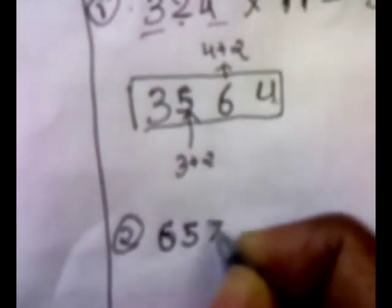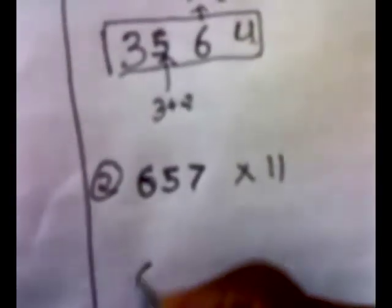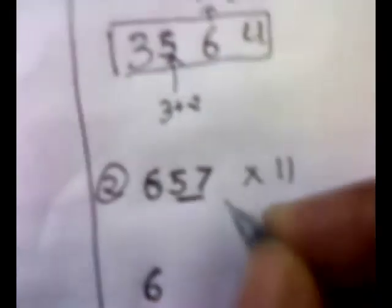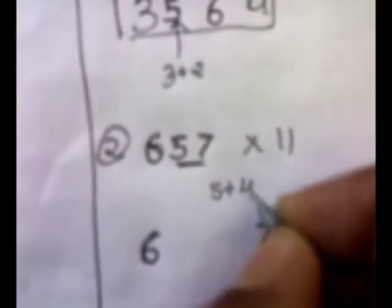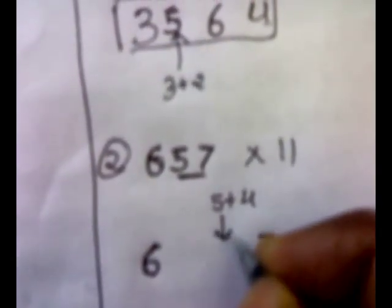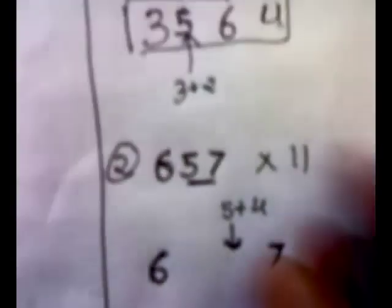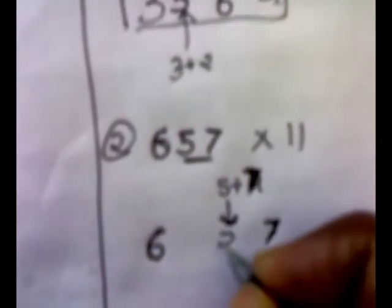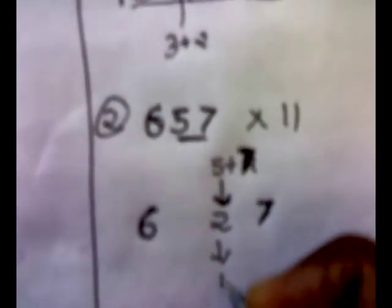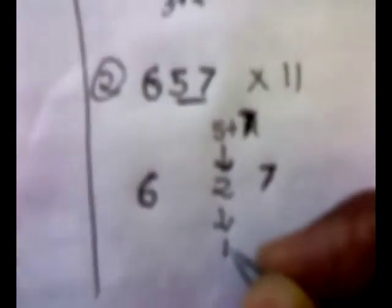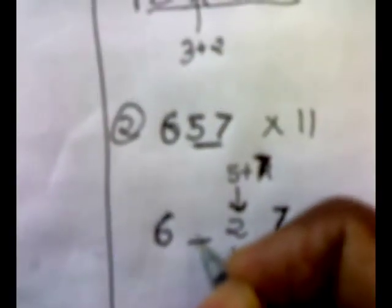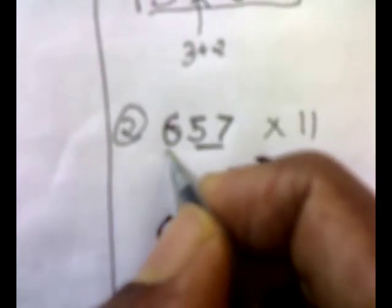Say 657 multiplied by 11. So we will put again 6 and 7 as it is. 5 plus 7, which gives us 12, so we will put 2 here and we have generated 1 carry. Now we will add this carry to the digit which will come here. The digit which will come here will be by adding these two digits: 6 plus 5.